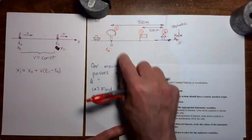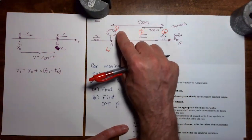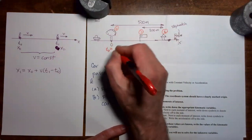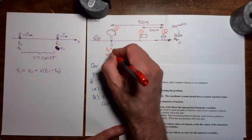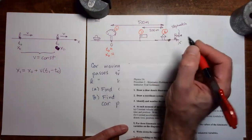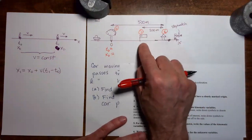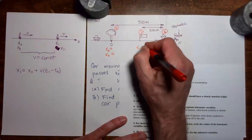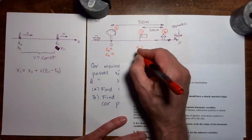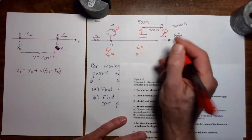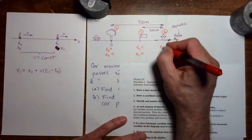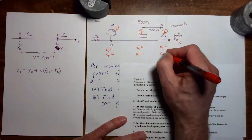At moment zero, the car passes the tree, so we have time zero and position zero. When the car passes the flag, that's moment one, giving us time one and position one. When the car passes the house, that's moment two, giving us time two and position two.